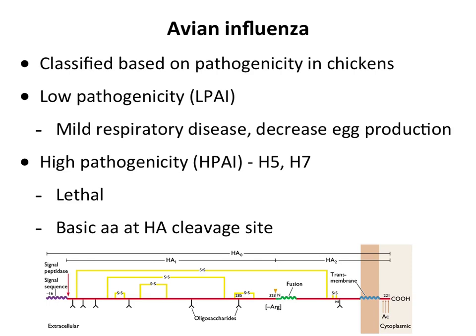HPAI strains are lethal in birds, particularly poultry — chickens and turkeys — and many wild birds as well. These viruses have in common a sequence of basic amino acids at the HA cleavage site. The hemagglutinin glycoprotein precursor must be cleaved to liberate the N-terminus, which contains the fusion peptide. If these viruses are not cleaved by proteases, they will not be infectious.